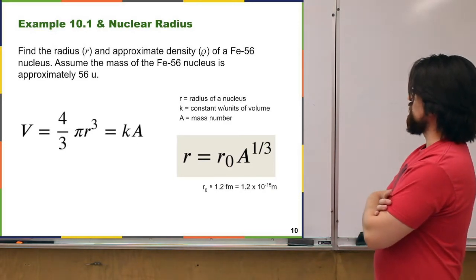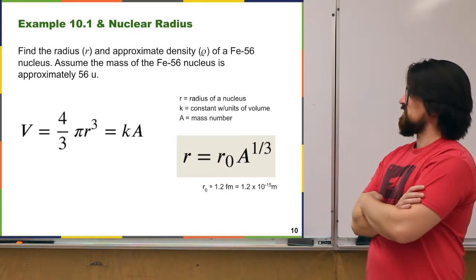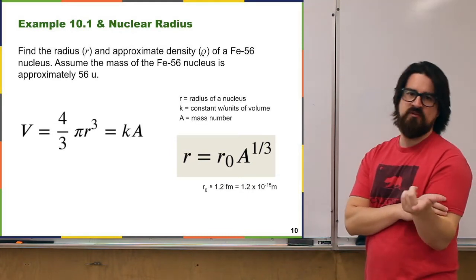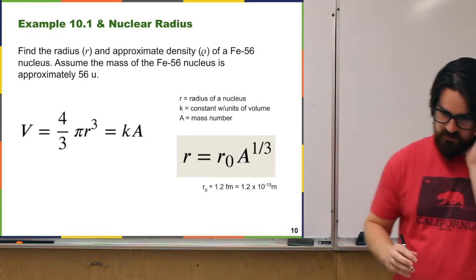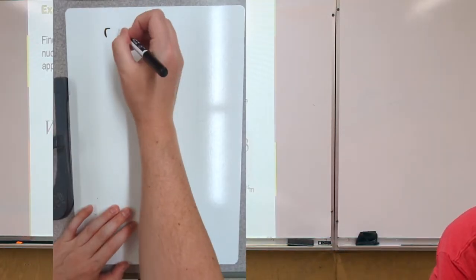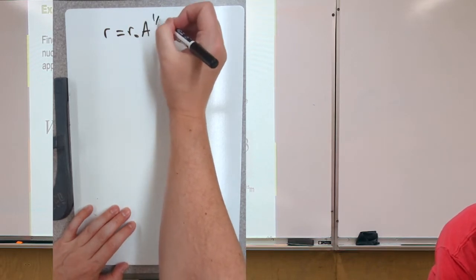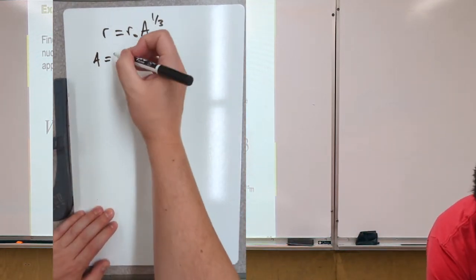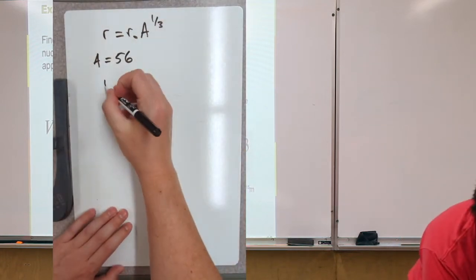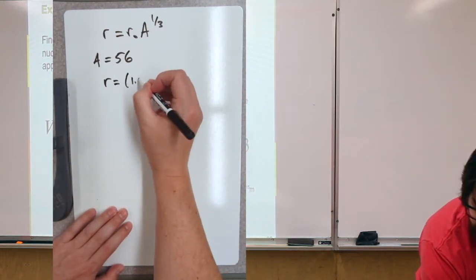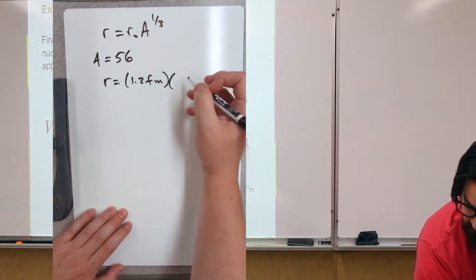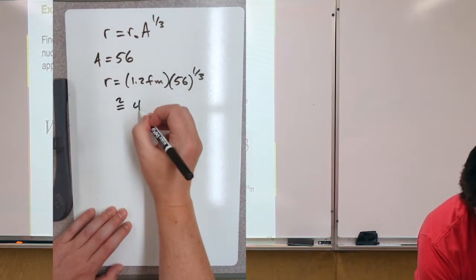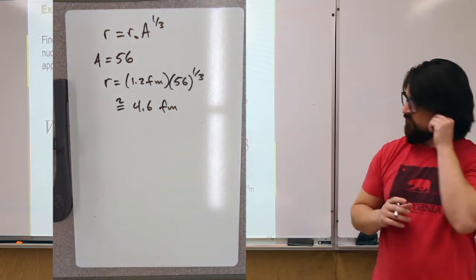Example: what is the radius of iron-56? Using the formula r equals r₀ times A to the one-third, for iron-56 the atomic mass number A equals 56. Plugging in, the radius of this isotope of iron comes out to be about 4.6 femtometers. Pretty straightforward.